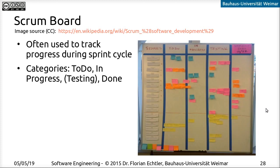Another important aspect of Scrum is the Scrum board, which is used to track progress during each cycle. Here's a very nice example — as you can see, it's just a whiteboard with a couple of labels, a bit of tape, and lots of post-its. Sometimes people also use digital versions; you can have something very similar in GitHub, where it's called Projects, and it looks quite similar to this board.